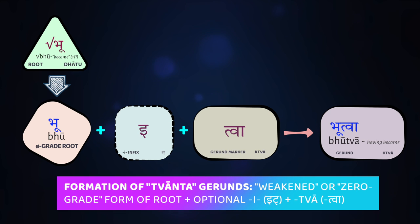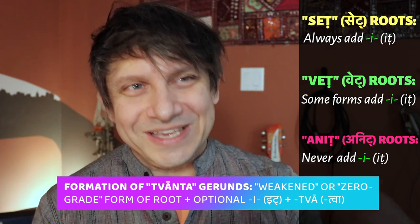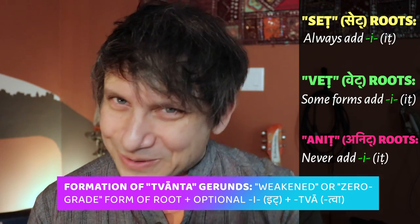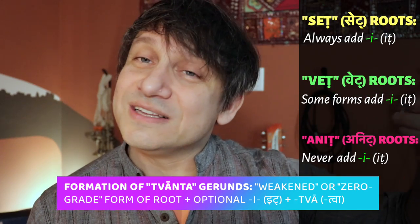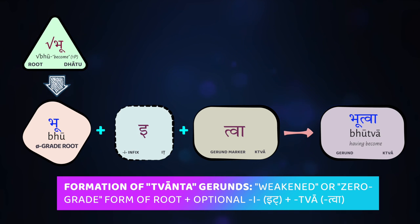The optional i depends on whether the root is set, anit, or vet. Set roots are ones where the i is mandatory. Anit roots are where i is forbidden. Vet roots are where sometimes it's added, sometimes not, depending on the construction. After the optional i, the third step is to add the suffix twa to get the gerund. For example: kr (to do/make) — no i added — gives krtwa, 'having done.' Smr (to remember) gives smrtwa, 'having remembered.' Bhu (to be), a vet root, gives bhutwa, 'having become.' A set root like pat (to read) becomes patitwa, and kad (to eat) becomes kaditwa.